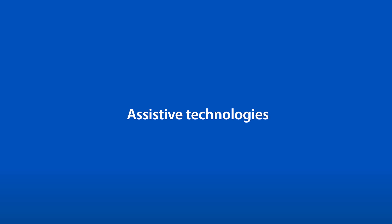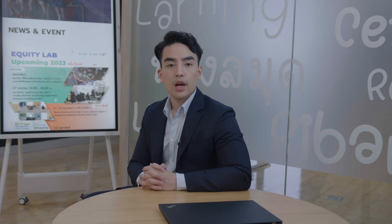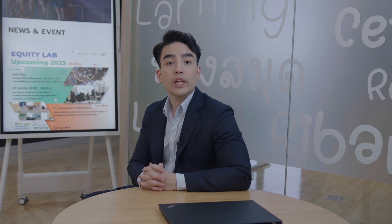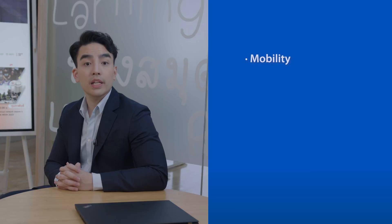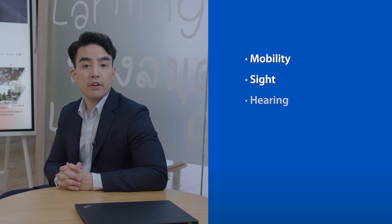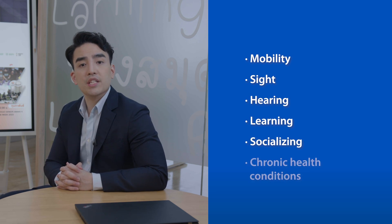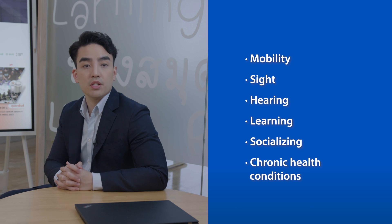Assistive technologies play a powerful role in making sure that learners from all backgrounds and abilities have equitable access to education. Assistive technologies can also help to support students with impairments such as mobility, sight, hearing, learning, and socializing, as well as chronic health conditions. For learners with reading or vision impairments, assistive technologies can include text-to-speech software.